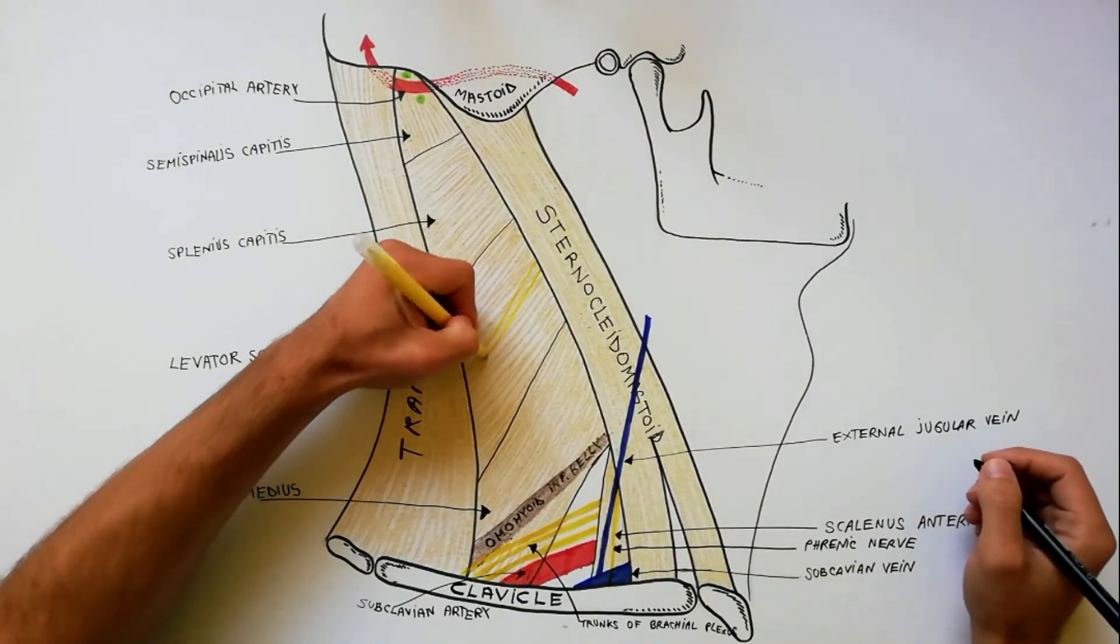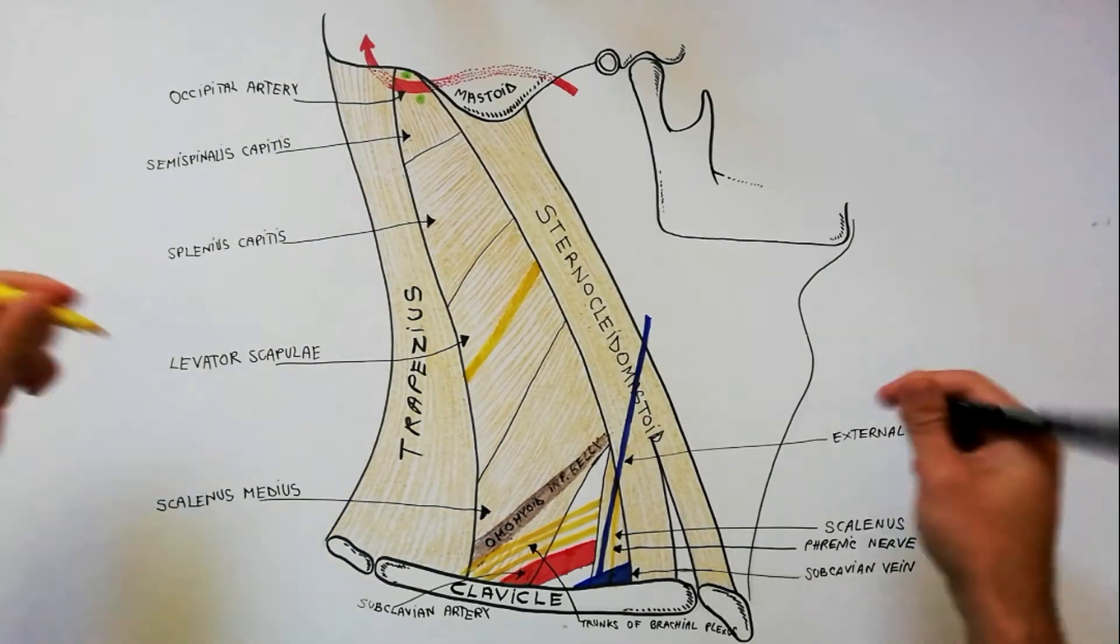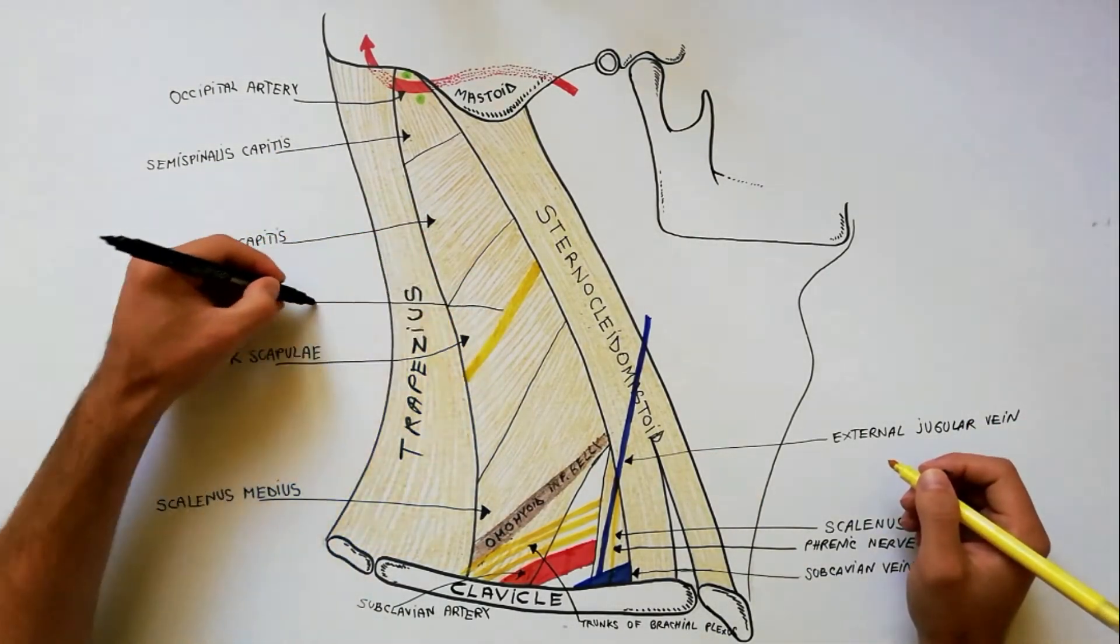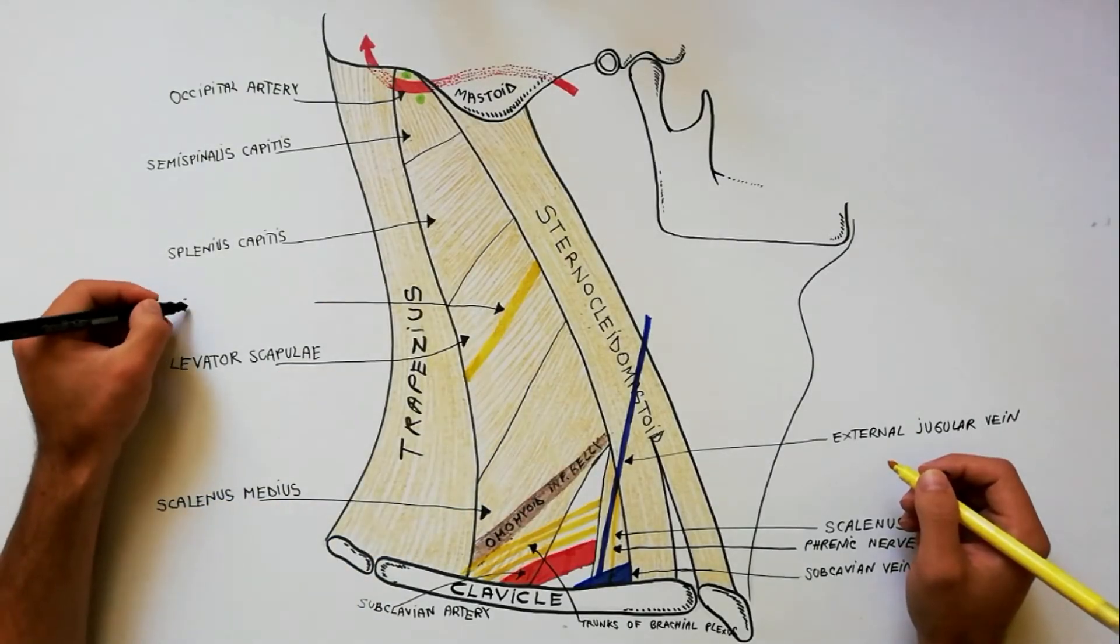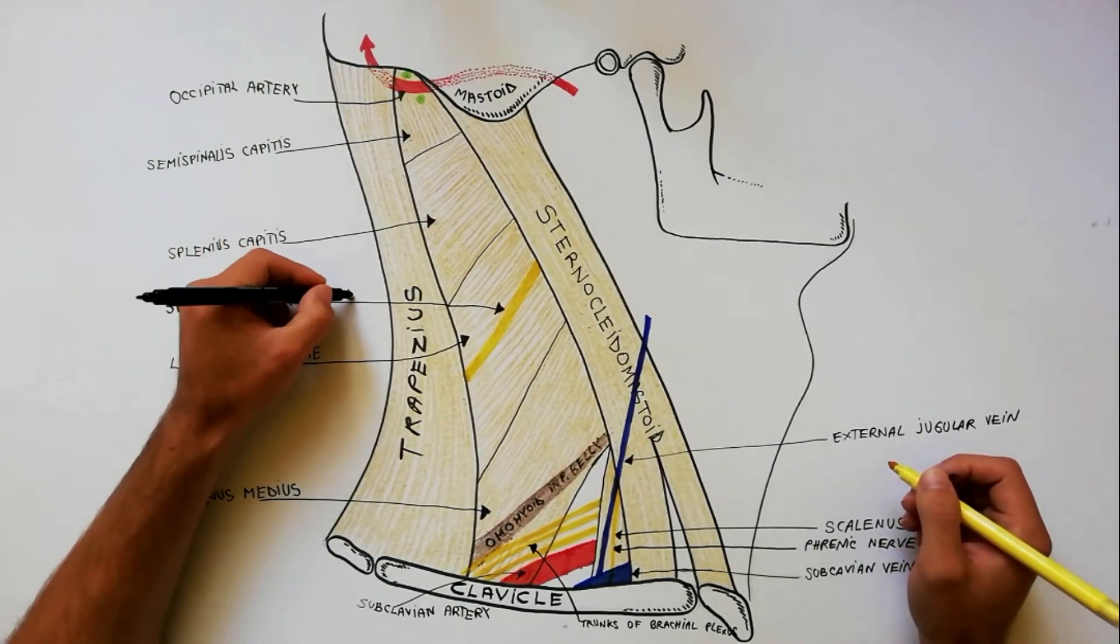The spinal accessory nerve comes in the region after piercing the sternocleidomastoid muscle, then lies on the levator scapulae, ultimately disappearing under the anterior border of trapezius.